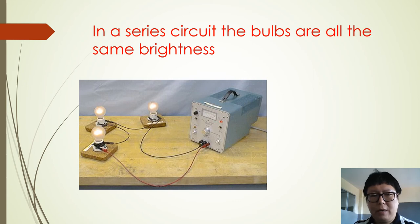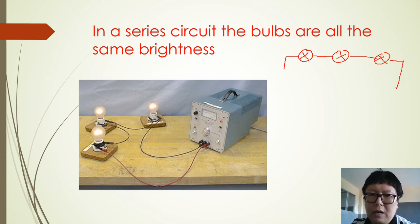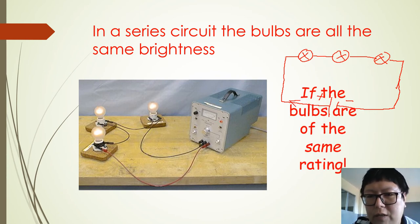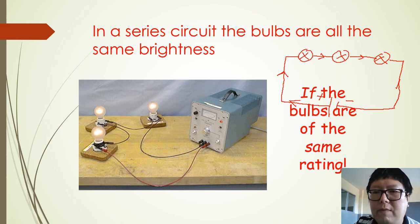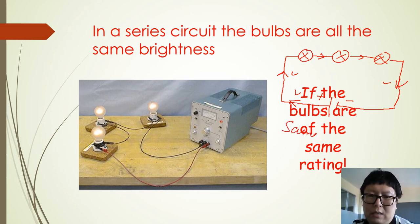Let's draw this circuit — there are three lamps. Draw lamp one, two, and three using the symbols, then connect with wire to the power supply. Remember: the long line on the cell symbol is positive and the short one is negative. Current flows from positive to negative. Since there are no branches, every section has the same current, so every lamp gets the same amount of current.